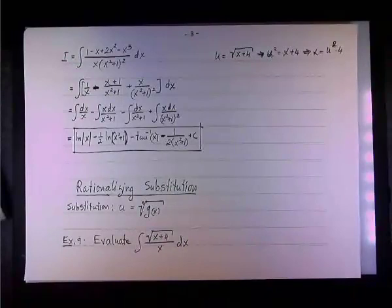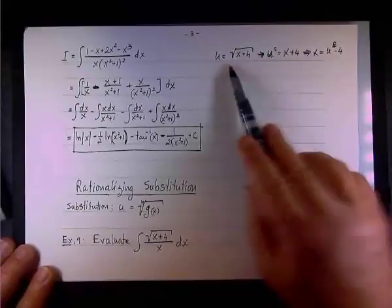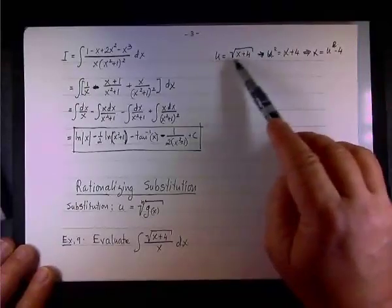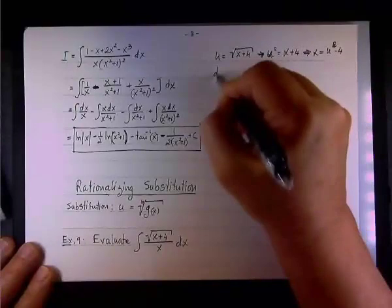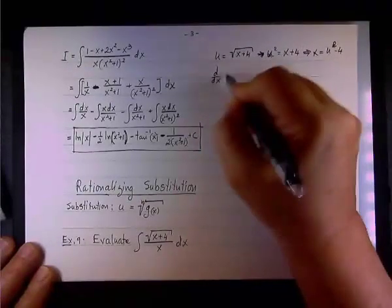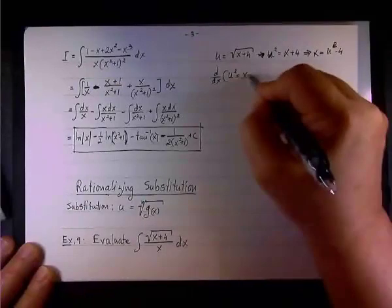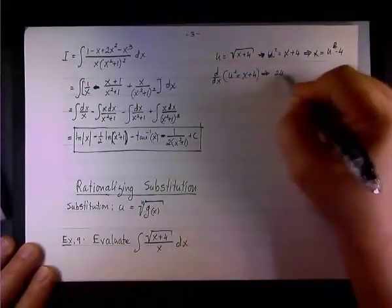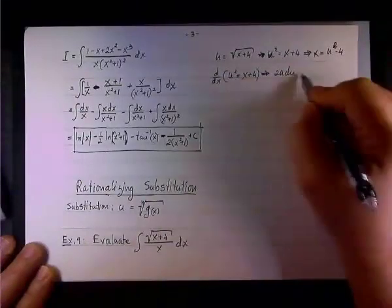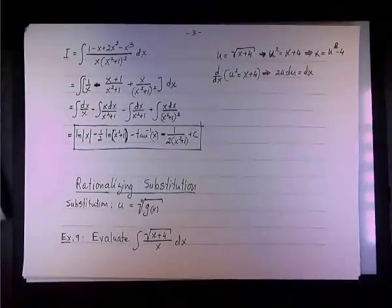The next thing, I need to substitute the dx. Now, instead of using the explicit expression, u equal the square root, I'll use implicit differentiation.